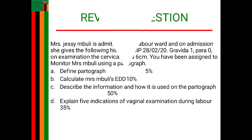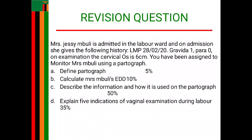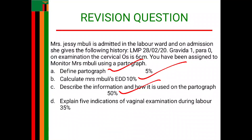We can move on to question C, which is saying describe the information and how it is used on the partograph. The first thing you talk about is the aims of the partograph itself. The first aim is to monitor maternal well-being. Apart from that, another aim is to monitor progress of labor. Then it is also to monitor fetal well-being, and also to monitor complications that may arise during labor.